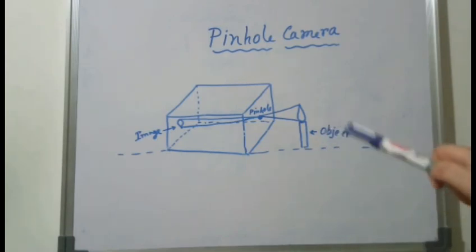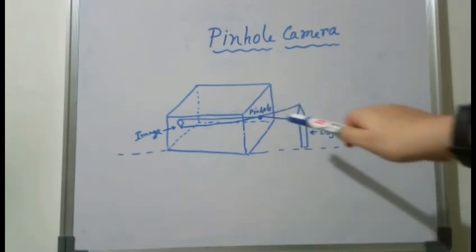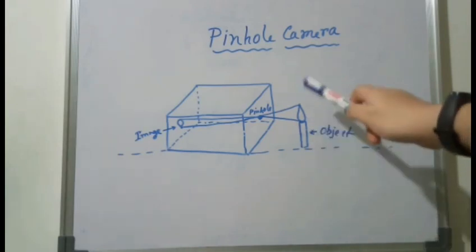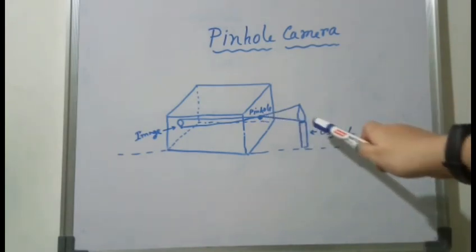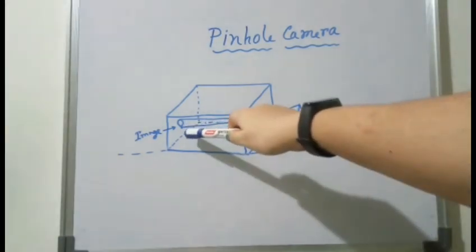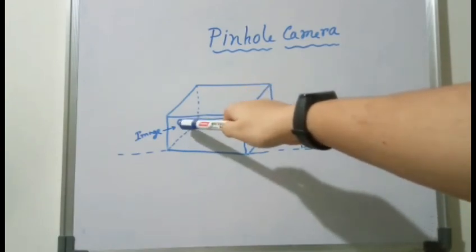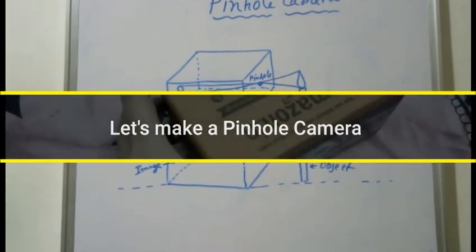It is effectively a light-proof box with a small hole in one side. Light from an object passes through the aperture and projects an inverted image on the opposite side of the box. You can see here — the object is on one side, this is the pinhole, and an inverted image is formed on the opposite wall of the pinhole camera.